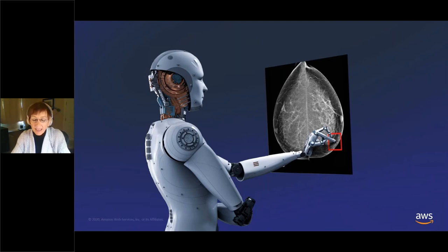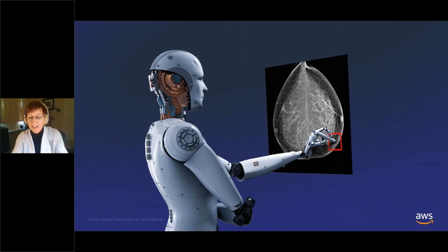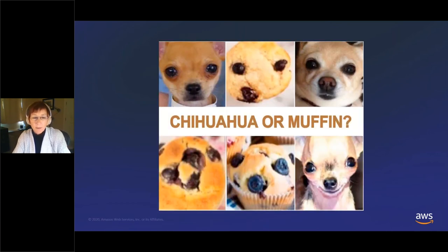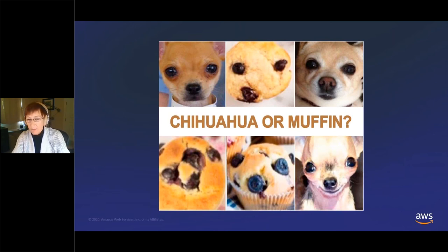Image analysis is an absolutely fascinating area of ROI for AI. One of my favorite image analysis examples is this one — take a moment to process it. What do you think? Chihuahua or muffin? I actually think I got most of them right, but this little guy in the middle on the top row — I could kind of go either way.